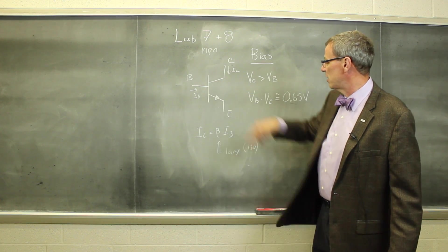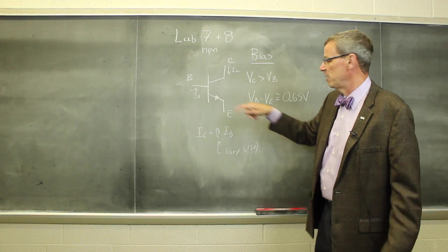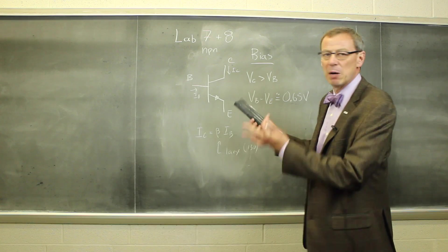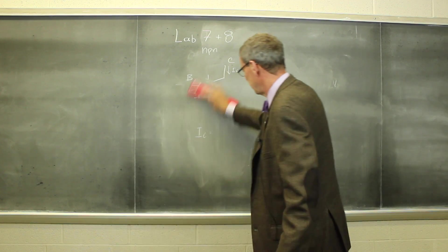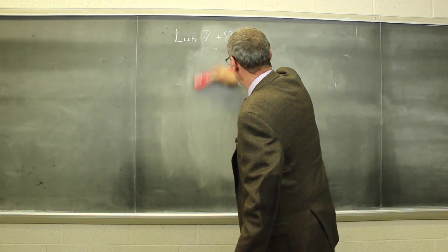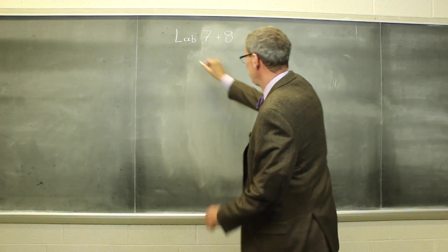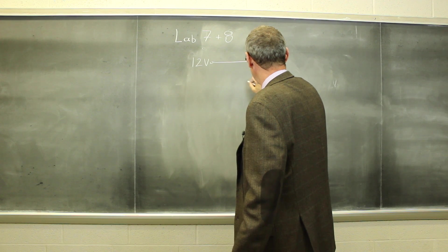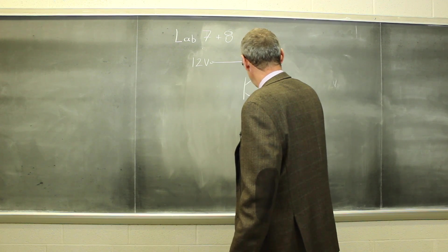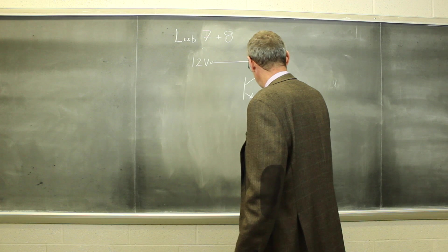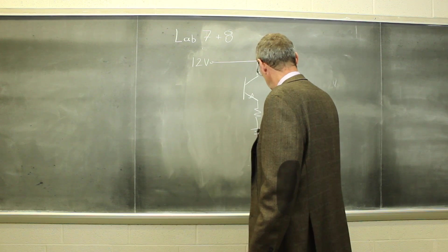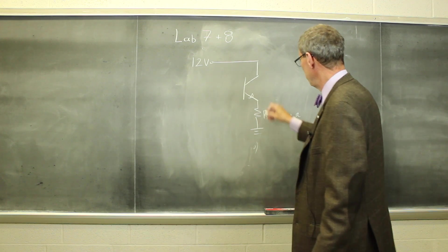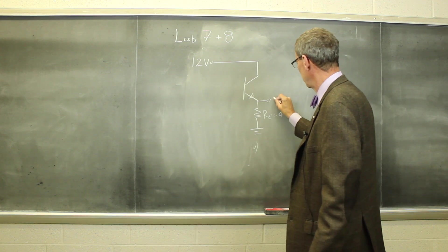The current out of the emitter is the sum of those two. So if this is small, then the emitter current is also large. Okay, so let's look at how we're going to bias that in the lab here. So we're going to take this transistor, and we're going to use a 12-volt supply. We're going to put that 12 volts into the collector. I'm going to put a resistor of about 470 ohms from the emitter to ground. I'm going to take the output here.